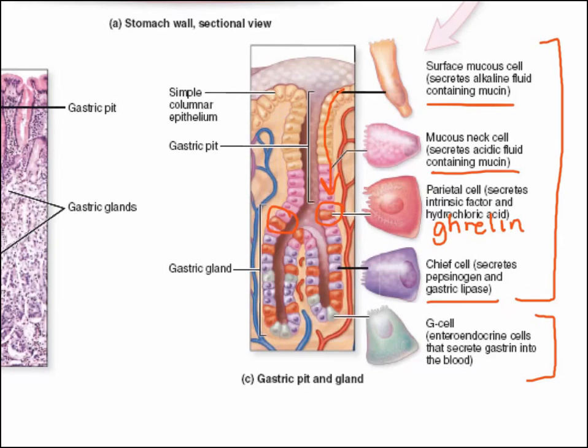Finally, we have the hormone-secreting cells, or the G cells. These G cells are enteroendocrine cells — meaning they're endocrine cells of the gut — and these secrete gastrin into the blood.